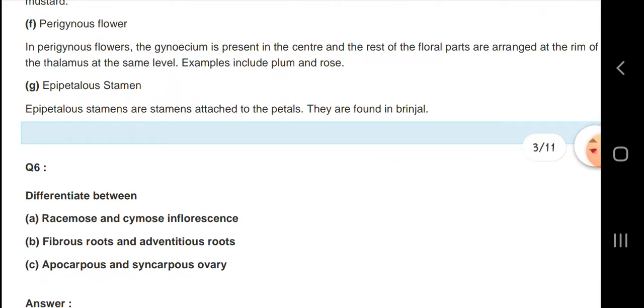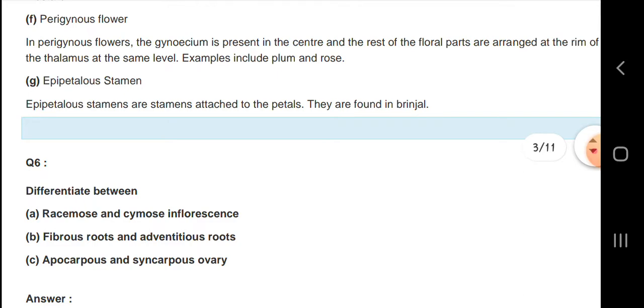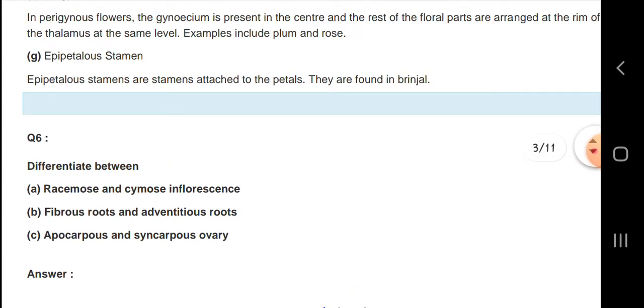In perigynous flowers, the gynoecium is present in the center and the rest of the floral parts are arranged on the rim. Epipetalous stamens are stamens attached to the petals.